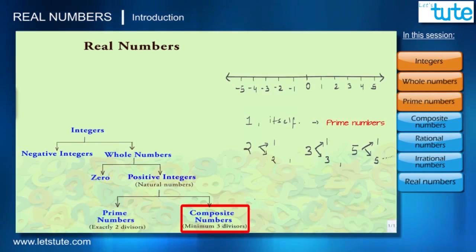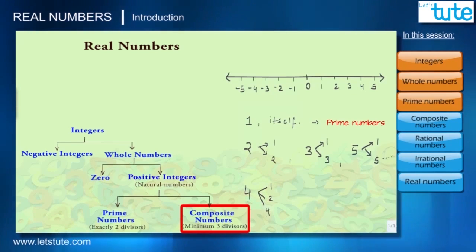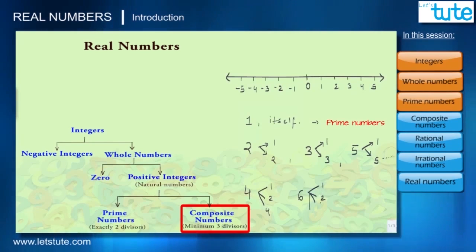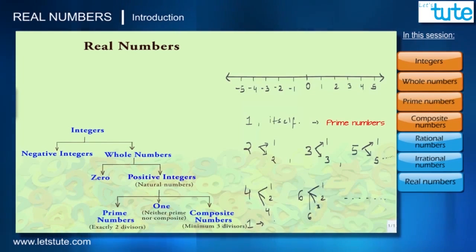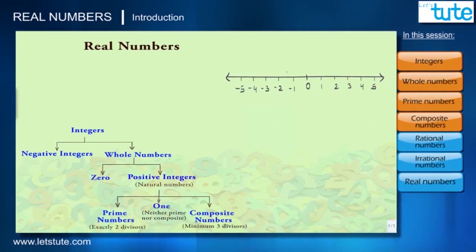Composite numbers are numbers which have at least three divisors. For example, 4 can be divided by 1, 2, and 4. Similarly, 6 has four divisors: 1, 2, 3, and 6 itself. So they are all composite numbers. The number 1 is the only number which has only one divisor, so 1 is neither prime nor composite.